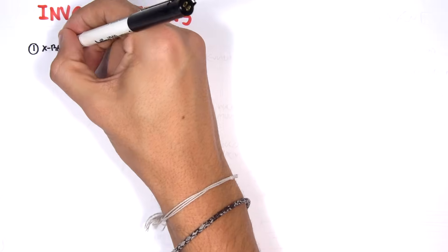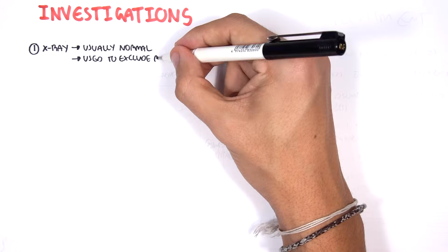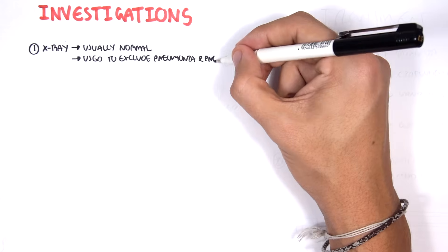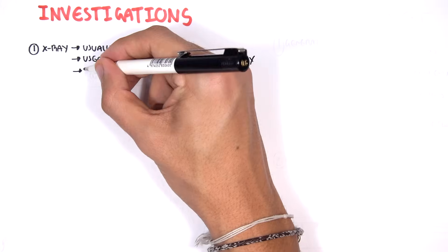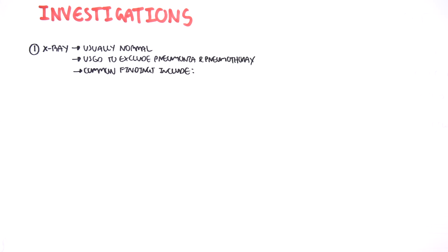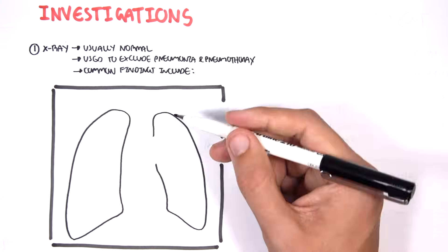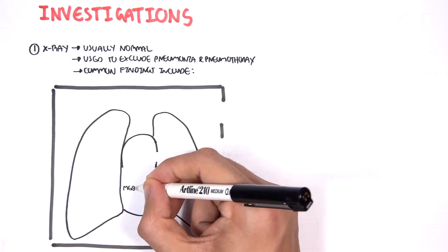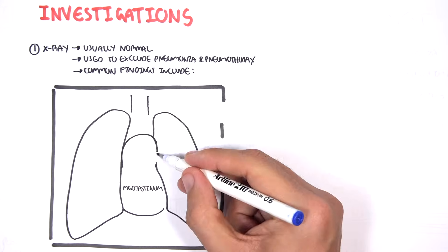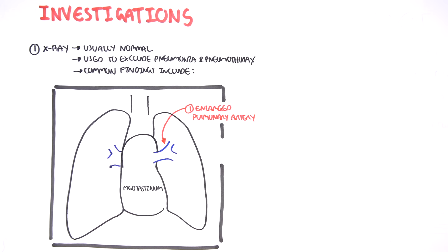We can do an X-ray. Now X-ray is very important for any respiratory problems, but X-rays usually come back normal for pulmonary embolism. X-rays are used to exclude other differentials such as pneumonia and pneumothorax. But you can find some common features in pulmonary embolism. So let's draw this X-ray image out. Here are the lungs, the mediastinum, and the heart.